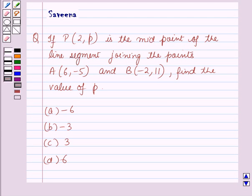Hello and welcome to the session. In this session we will discuss a question which says that if P(2,P) is the midpoint of the line segment joining the points A(6,-5) and B(-2,11),